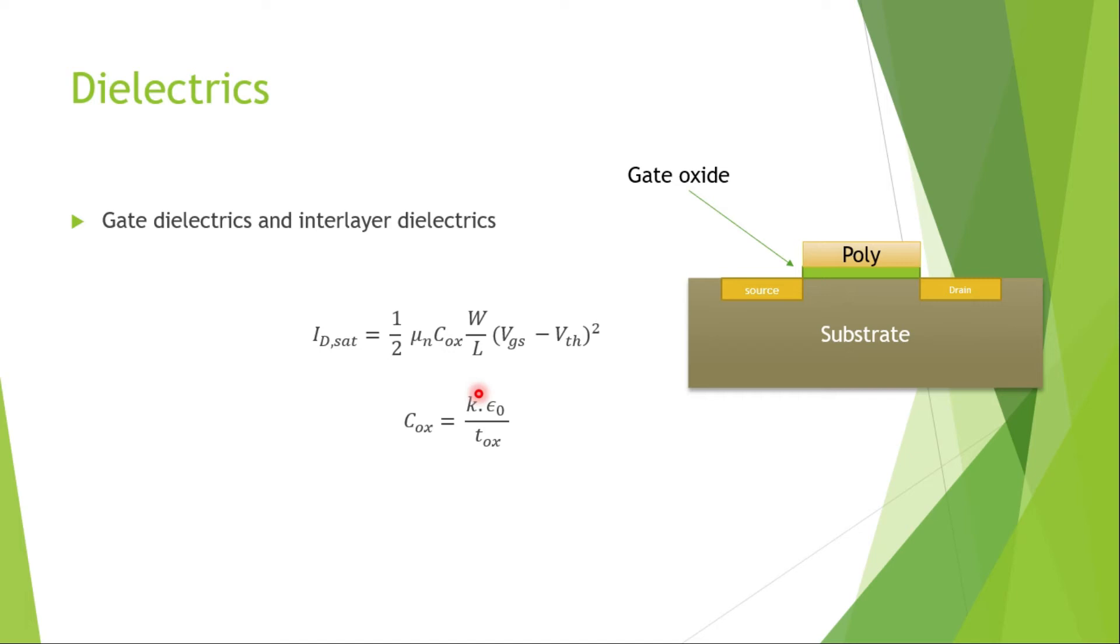So there is a chance that we can make it better. Also, the reliability is a concern when this thickness reduces, because the dielectric can break down pretty easily. So these are the two important reasons. One is the speed, and one more is reliability.